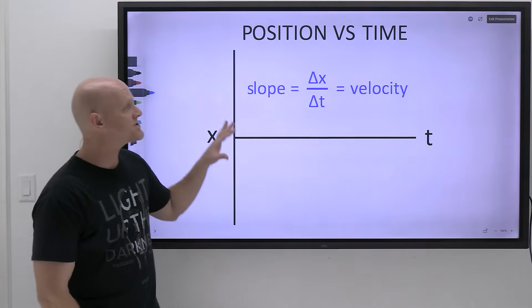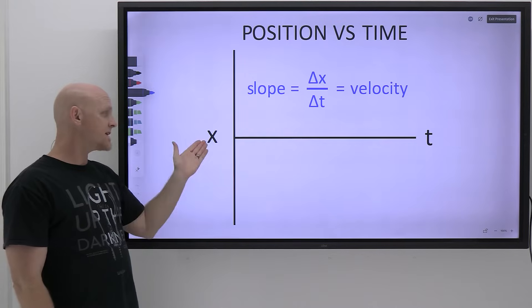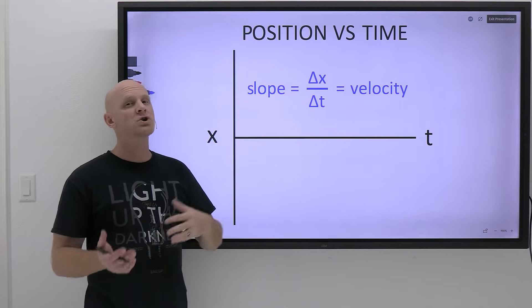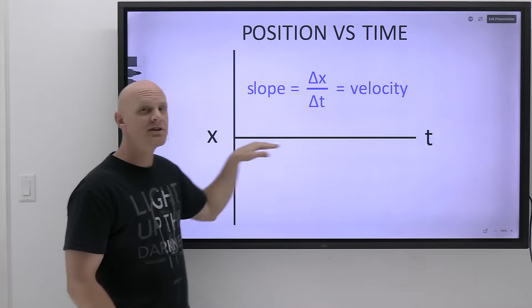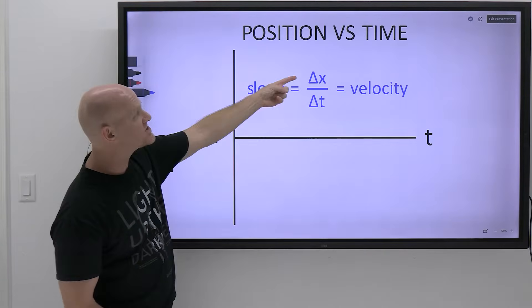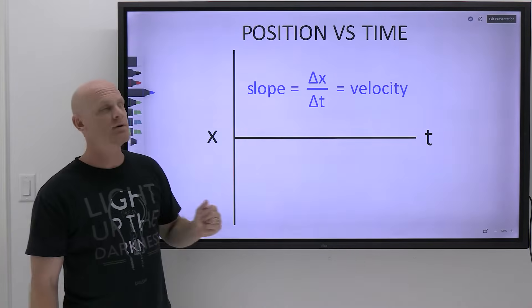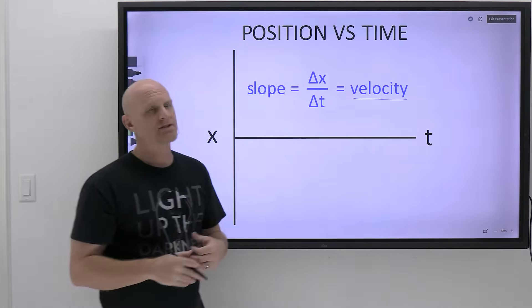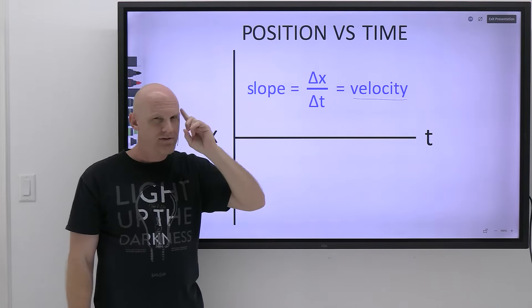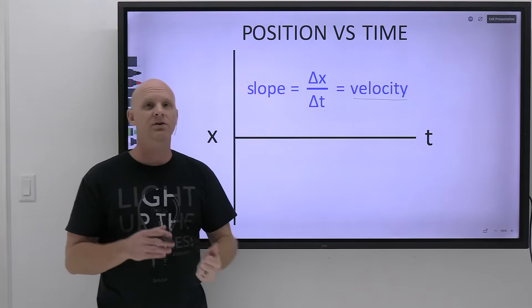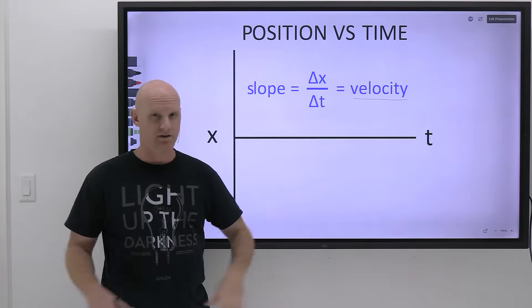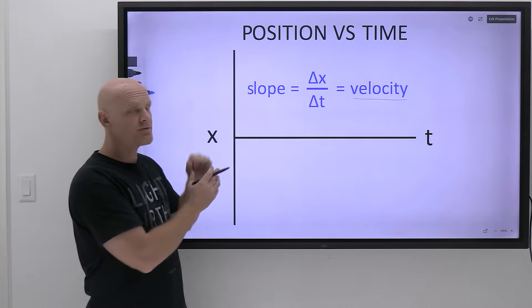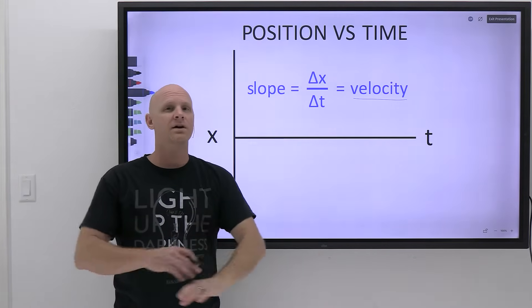We're going to start with a graph of position versus time. We plot position on the y-axis and time on the x-axis. If you recall, the slope of a graph is equal to rise over run — the change in y over the change in x — which in this case corresponds to the change in x over the change in t. That is velocity. So the slope tells you the velocity, and the area under the curve doesn't tell you anything on a position versus time graph.